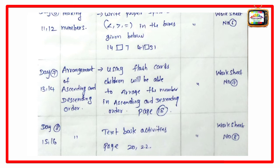Next, Day 7, periods 13-14, arrangement of ascending and descending order. Using flashcards, children will be able to arrange the number in ascending and descending order. Page number 18. This is the group activity, worksheet number 7, then individual work.